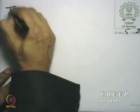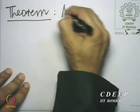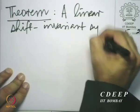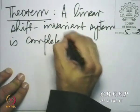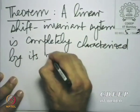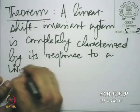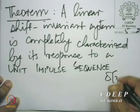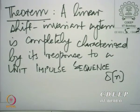A linear shift invariant system is completely characterized by its response to a unit impulse sequence δ[n]. We need a moment to reflect on what is meant by complete characterization. When would you say a system has been completely characterized? One response: whenever I give it an input, I know what the expected output will be.